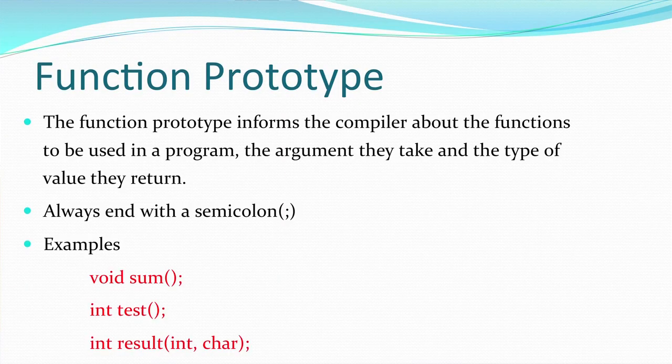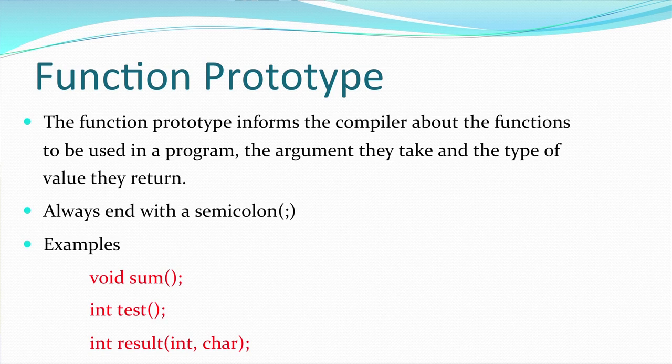Examples of function prototypes include: void sum() — a void function with no return value; int test() — returns an integer; and int result(int, char) — takes two arguments, one integer and one character, and returns an integer. All function prototypes end with a semicolon, and you must clearly specify the data types of both the arguments and the return value.